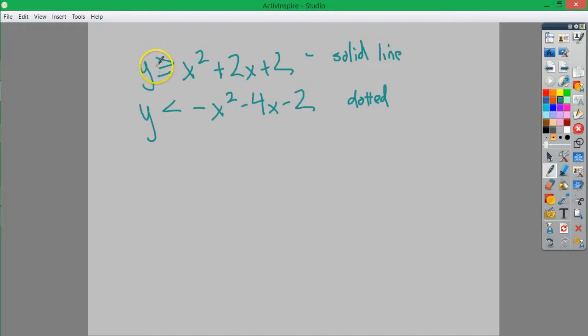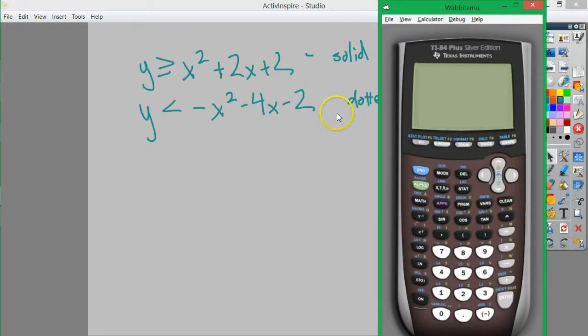y is next to the larger or the greater end, so that means y's value is greater than x squared plus 2x plus 2. In this case, y is less than negative x squared minus 4x minus 2. So, let me graph it here really quickly.